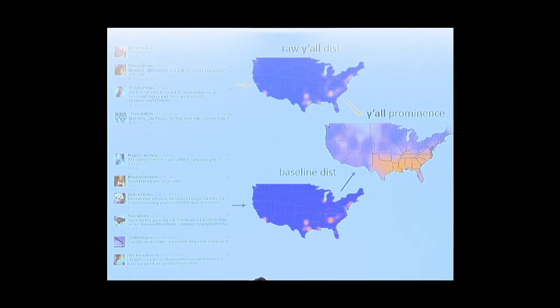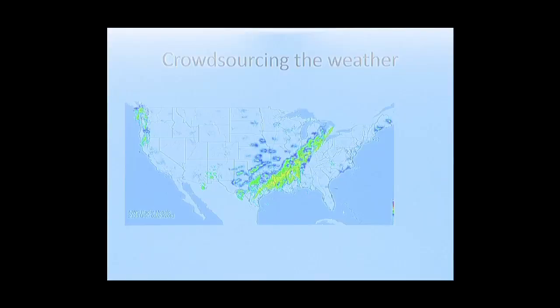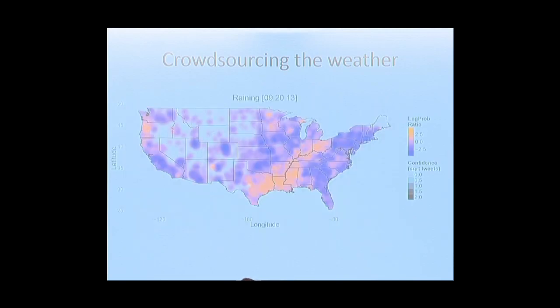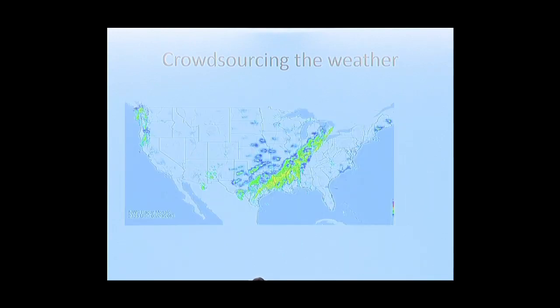In case language doesn't interest you, I wanted to check this on something with a little more of a physical component. Here's a radar map — there was a big storm moving through on September 20th, a big storm in the middle of the country. Sure enough, if we search for people tweeting about raining, orange here is more prominent and blue is less prominent, and we're seeing it pop up exactly where we were seeing rain on the radar.